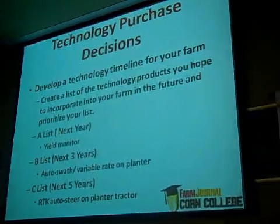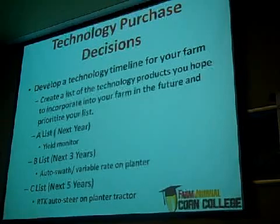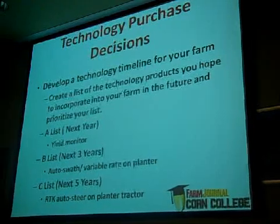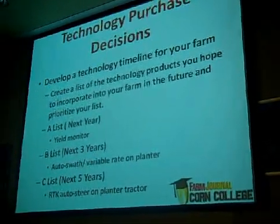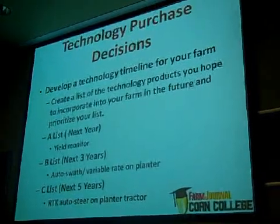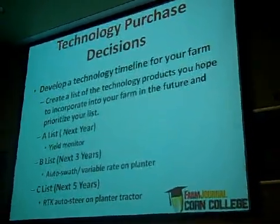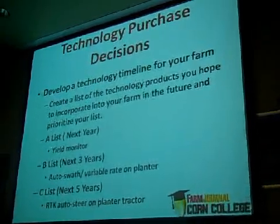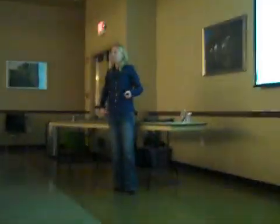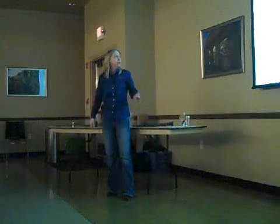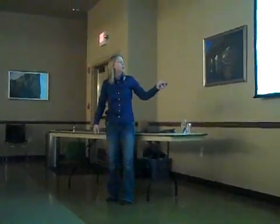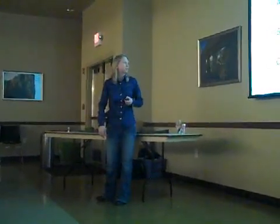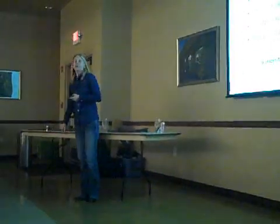Then start to answer the questions: where do I want to be next year, or maybe in three years? List out things for where you want to go. If we know that in three years you want to do auto swath and variable rate on your planter, that might change what we do back here with the yield monitor. All these things end up relating together, versus deciding later that you've got to start back over on the monitor from a yield monitoring perspective. Try to come up with this timeline to get a handle on what we want to do.